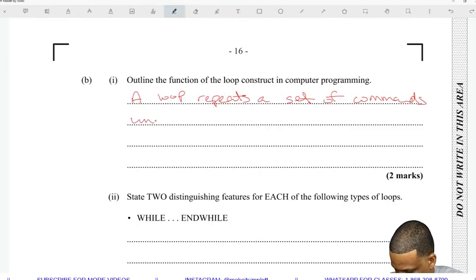A loop repeats a set of commands until a condition is met. State two distinguishing features for each of the following types of loops: WHILE, ENDWHILE and REPEAT, UNTIL.